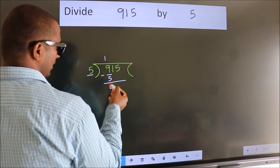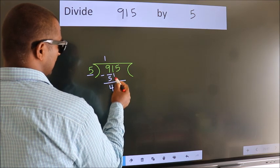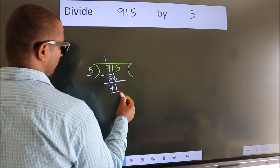We get 4. After this, bring down the beside number. So 1 down. So 41.